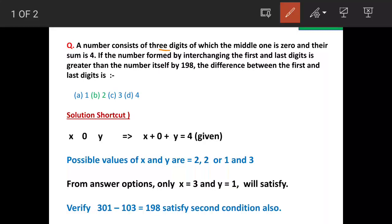A number consists of three digits, out of which the middle one is 0 and the sum is 4. So this is the first statement in the question. Let's say the number is x, 0 and y. These are three digits. So when you add these digits, the sum is 4.